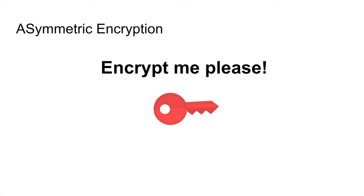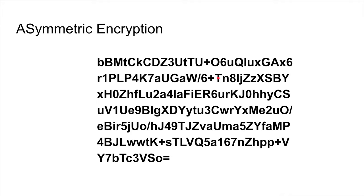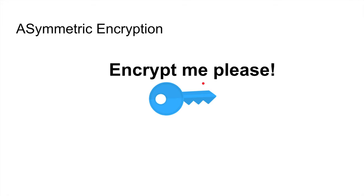Here's how it works: I have text to encrypt. I use a red key — indicating it's public. It's called a public key, meaning it's okay if it's leaked; everyone can have it. But you can only encrypt with the public key — you cannot decrypt with it. To decrypt, you need the second key of the pair: the blue key, or private key. Apply it and you get the text back.